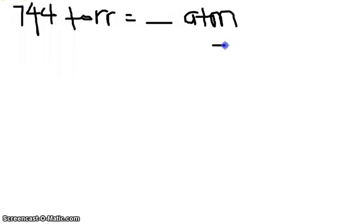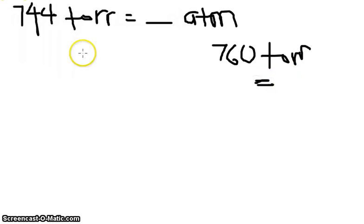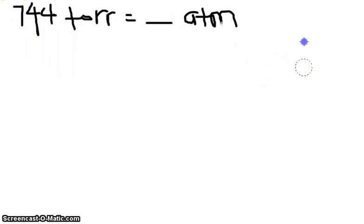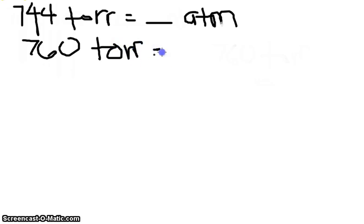In this problem, the equivalent statement that we need is that there are 760 Torr in... Let me just erase that a little bit. Let's transfer. Okay. So, we have 760 Torr, and that is equivalent to 1 Atmosphere.